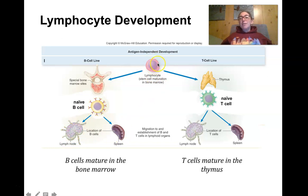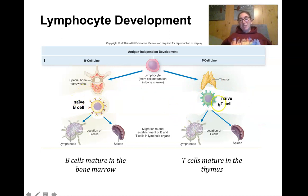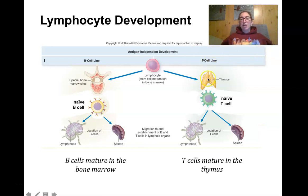Some baby lymphocytes will leave the bone marrow and migrate to the thymus, where they mature into a different type of cell — a T cell. In fact, B and T come from the fact that B cells mature in the bone marrow and T cells mature in the thymus. The thymus is the lymphoid organ right above the heart. Those naive T cells also go to the lymph node and the spleen, where they hang out and wait to be presented with antigen and activated.